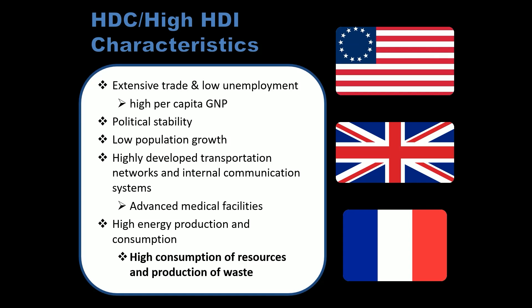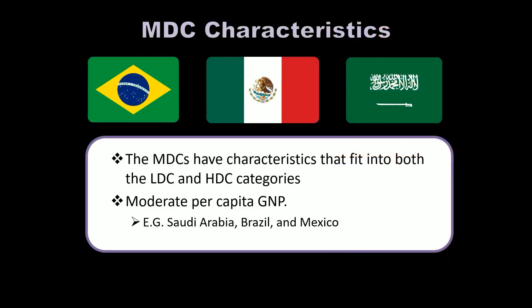High energy production and consumption, and high consumption of resources and production of waste — this is a double-edged sword. The further you move along the demographic transition, the lower your population growth, but the higher your per capita resource use. A moderately developed country has characteristics from both lists — it doesn't feel right to call it less developed, but it doesn't fully qualify as highly developed either. Brazil, Mexico, and Saudi Arabia might be good candidates for that category.